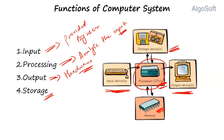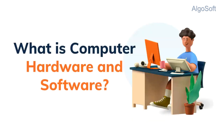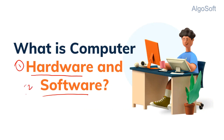All these capabilities in a computer system become possible because of only two major components — hardware and software. Let's understand what hardware and software are. Hardware and software are two terms you've probably heard of. The odds are high that you are using both on a daily basis, whether it's your smartphone, personal computer, laptop, or any other device in which you put in some request and get some output. Let's take a deeper look at what these two things are.